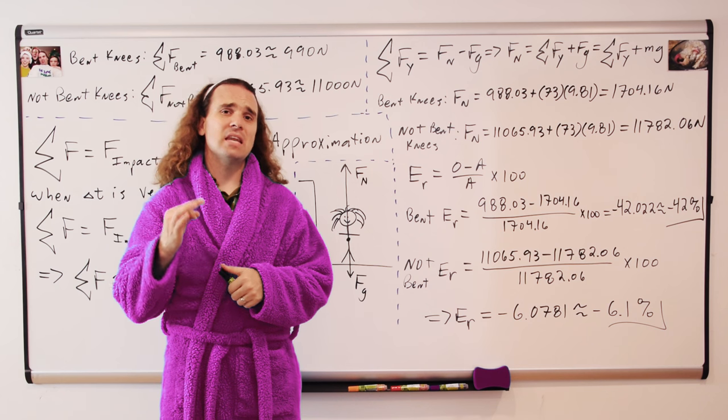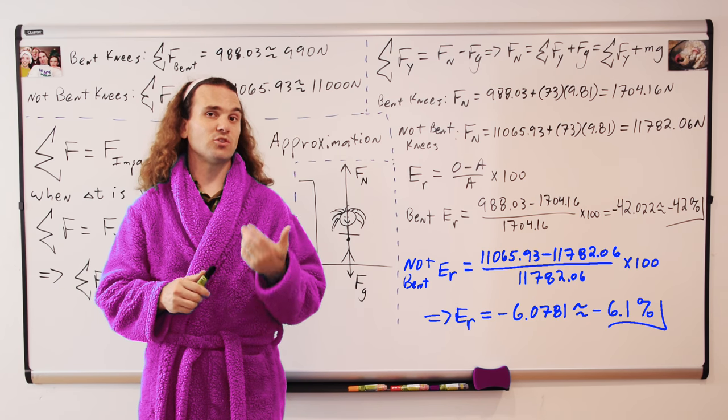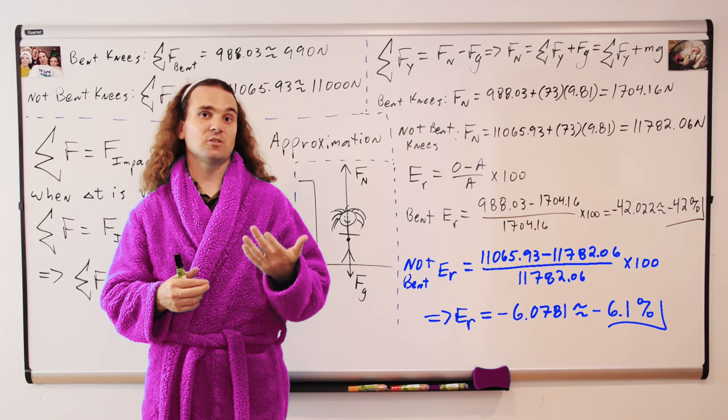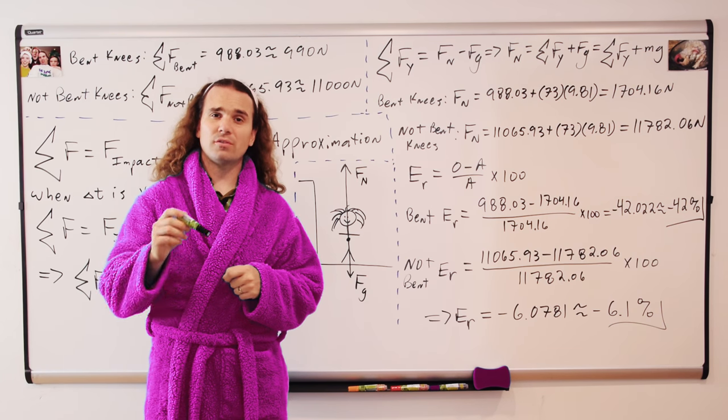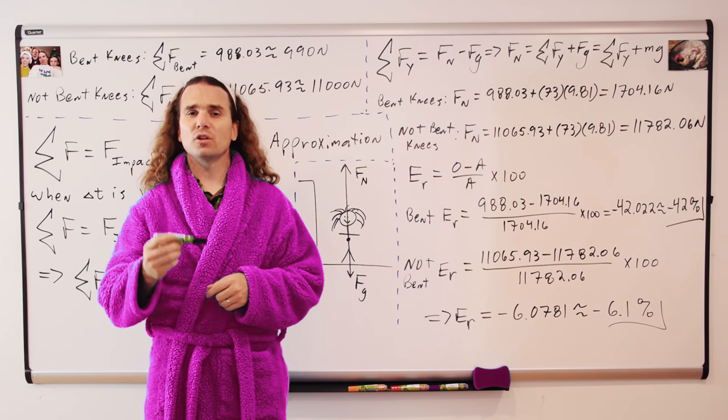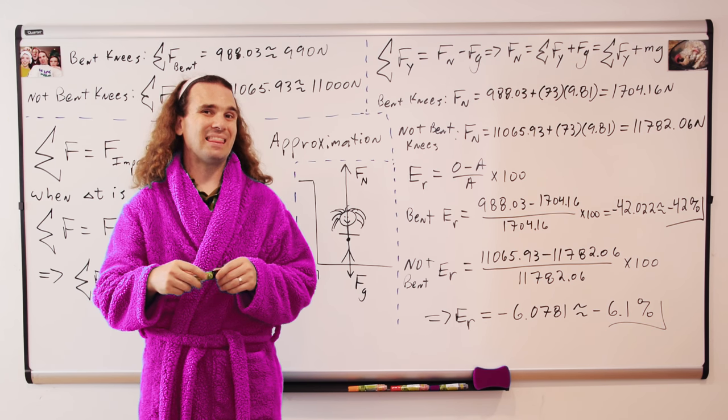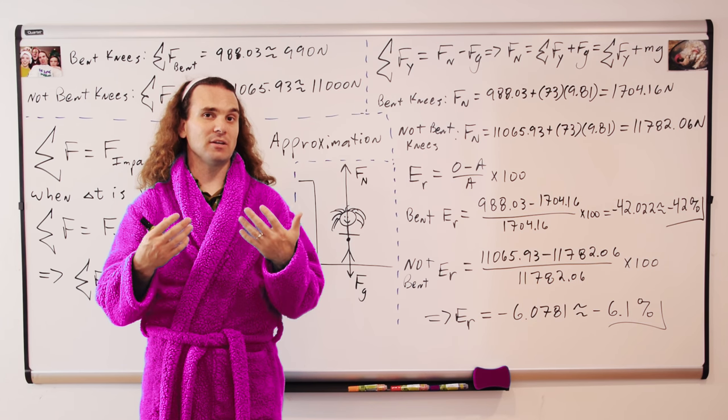And even in the not bent knee case, where the time during the collision was 0.025 seconds, the impulse approximation produced an error of roughly 6%. We just showed that the shorter the time during the collision, the larger the force of impact relative to all the other forces, and therefore the more accurate the impulse approximation is.